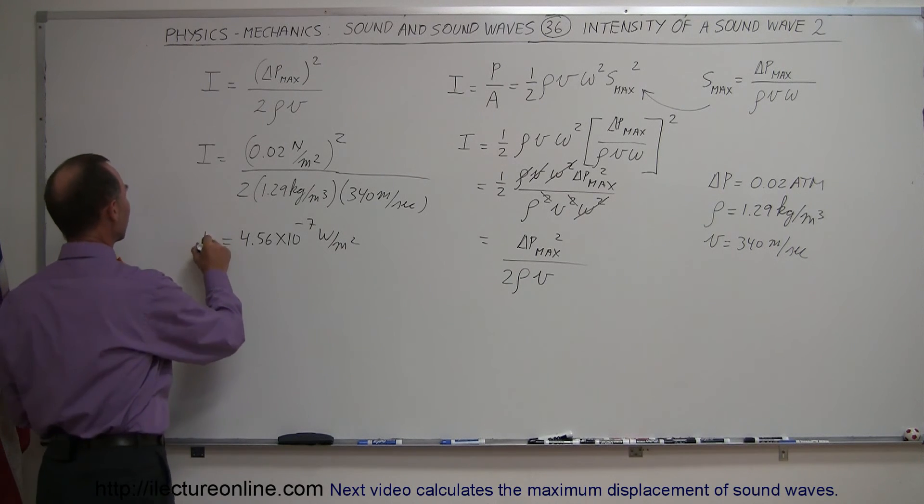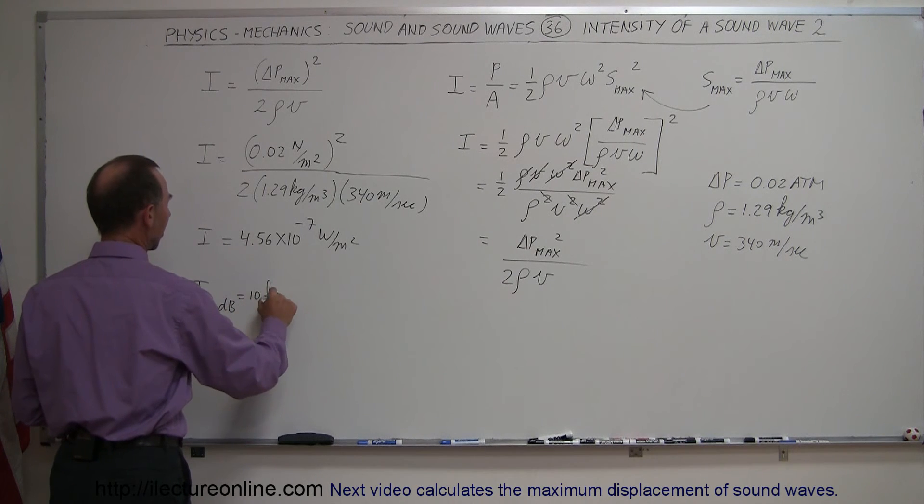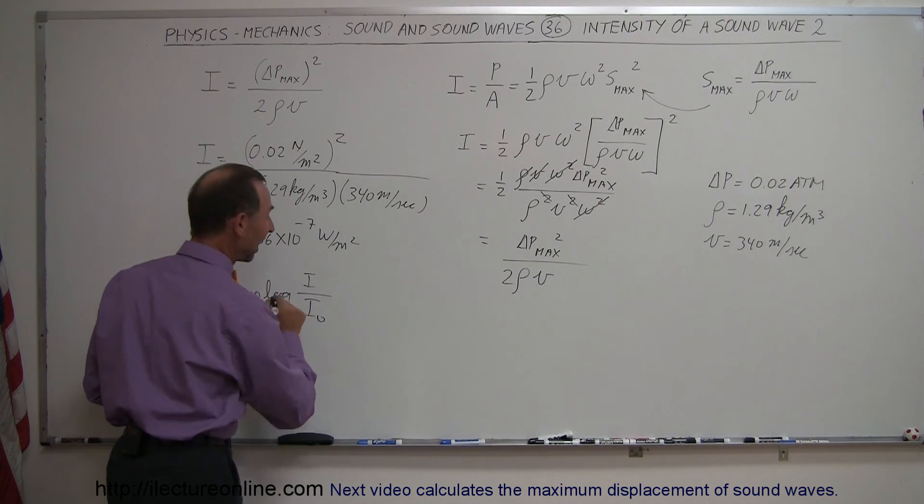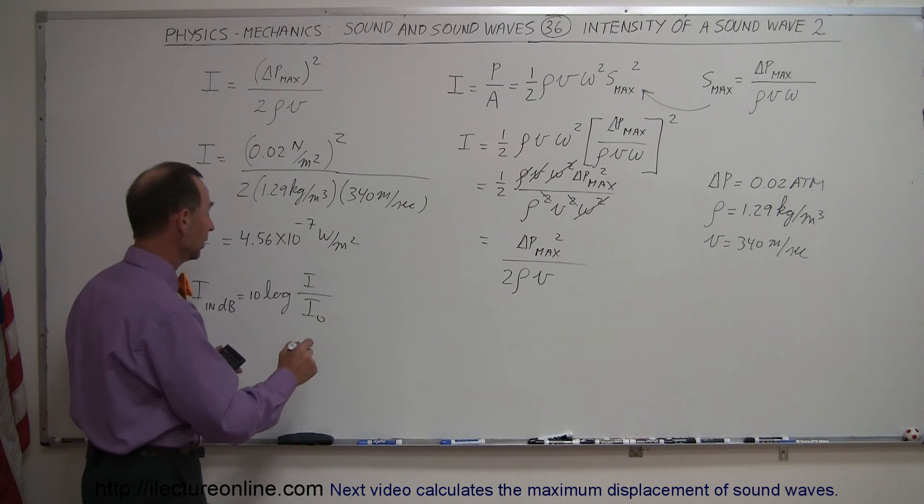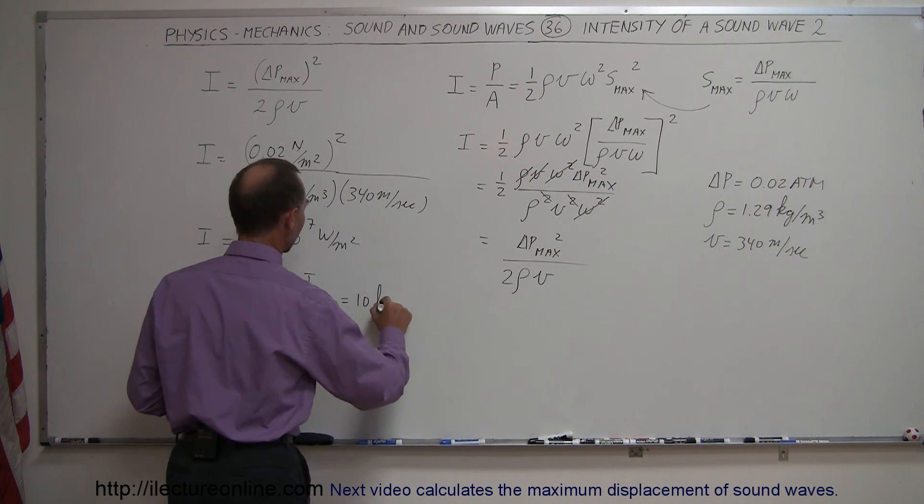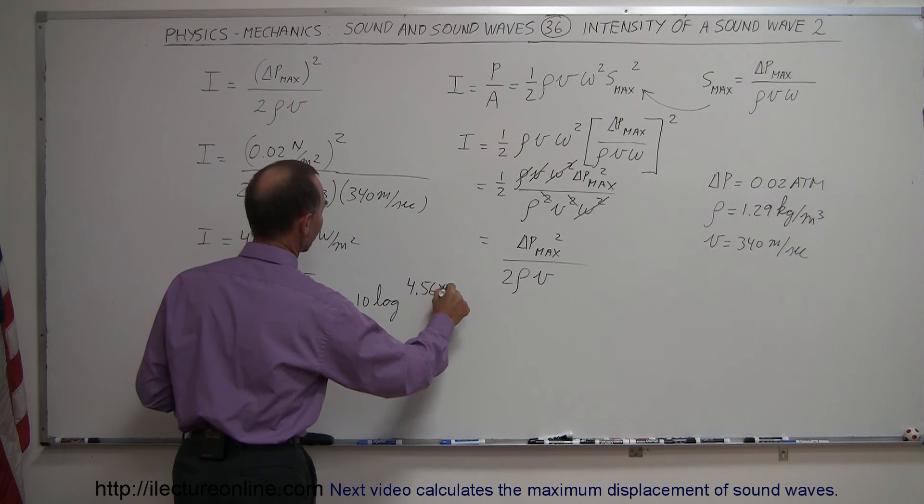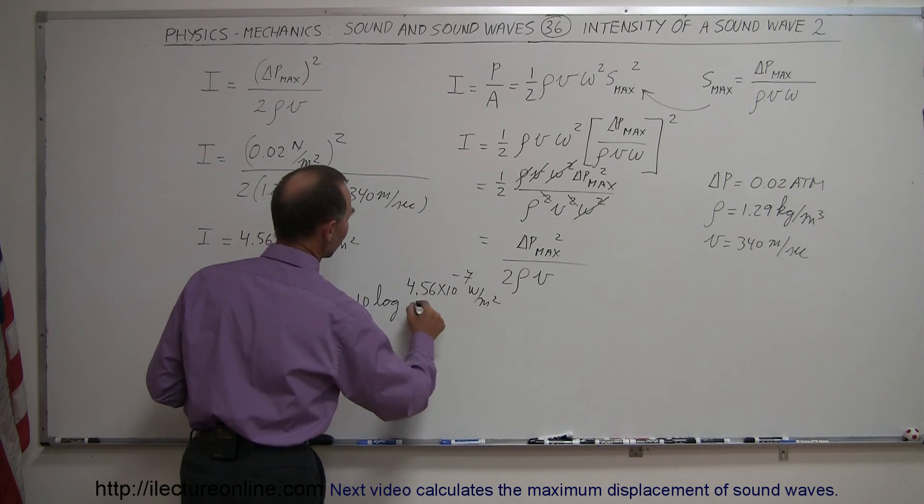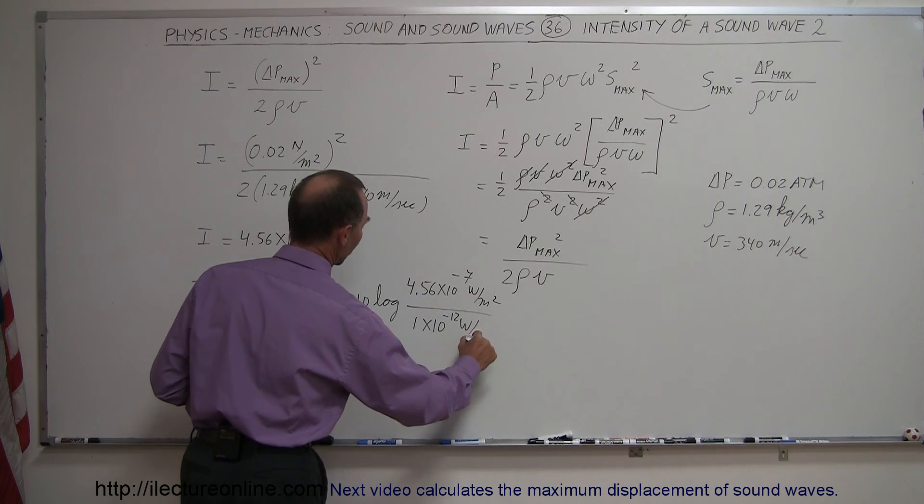If we convert that to intensity in decibels, intensity in decibels is equal to 10 times the log of the intensity that we here calculated, divided by the base intensity I naught, which of course is 1 times 10 to the minus 12 watts per square meter. So this is equal to 10 times the log of the intensity we just found, 4.56 times 10 to the minus 7 watts per square meter, we divide that by 1 times 10 to the minus 12 watts per square meter.